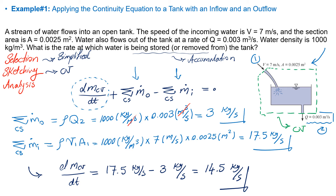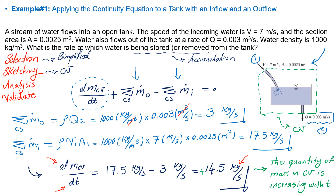The last step is to validate. I'm going to validate the units. The right-hand side has units of kg/s. On the left-hand side, the numerator is mass in kilograms and the denominator is time in seconds, so the units are consistent. Because the value of accumulation is positive, it means that the quantity of mass within the control volume is increasing with time. This is a simple example of how to apply the continuity equation to a real problem to calculate the amount of accumulation of water in a tank.